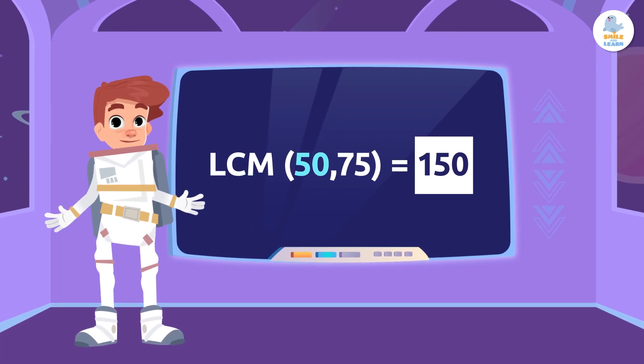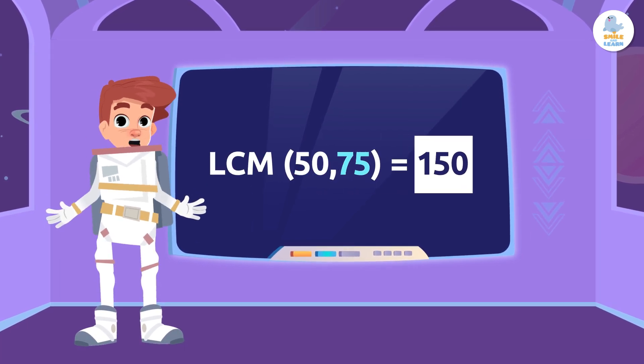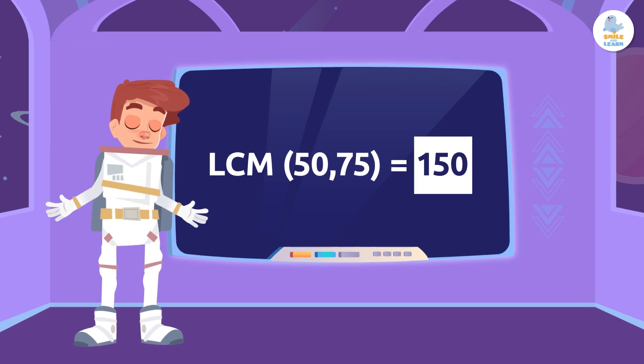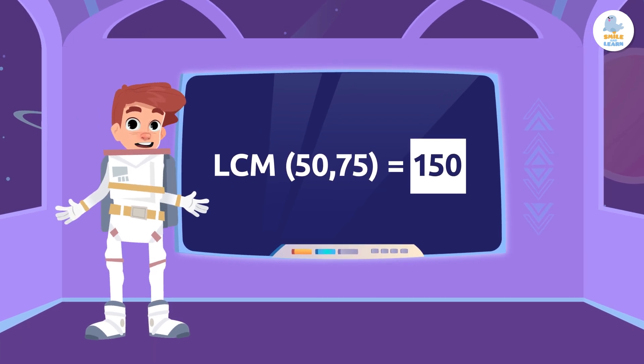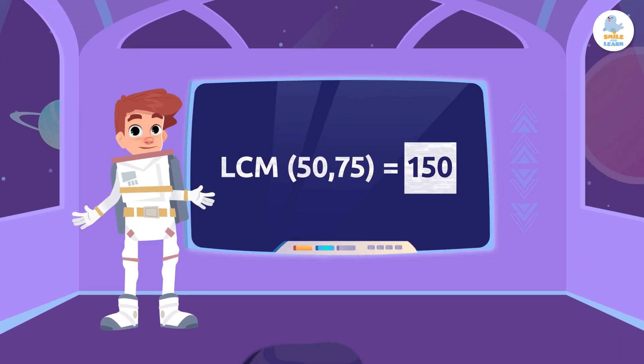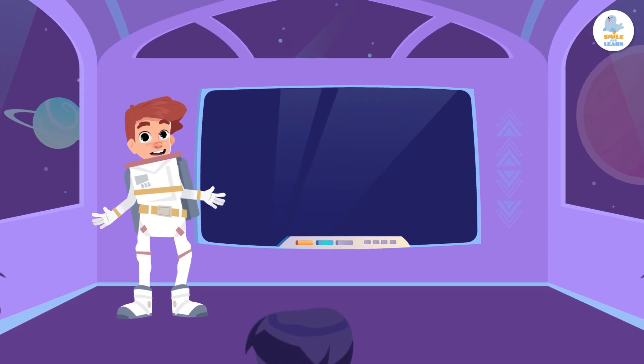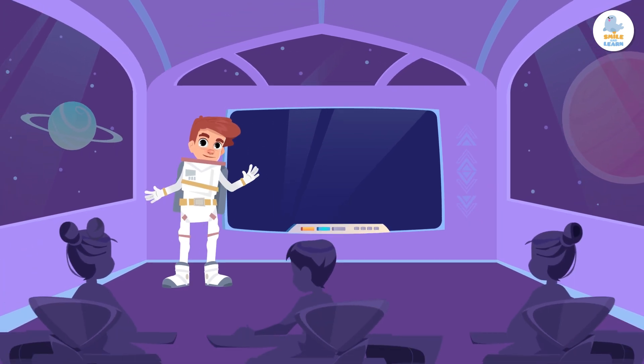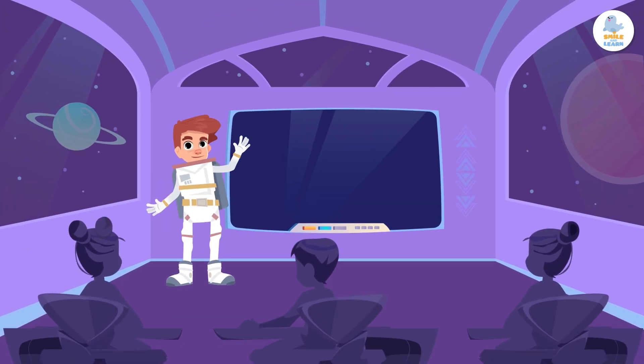150 is the lowest common multiple of 50 and 75! That's all for today, everybody. I hope this helps you solve future math problems — see you soon!